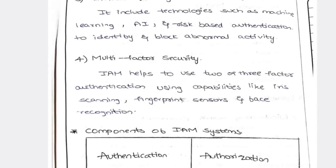The third IAM benefit is advanced tracking of anomalies — using AI like ChatGPT. Authentication helps identify and block abnormal activity. If your phone is doing any abnormal activity, it will rectify and give a hint to you. Also, if you lose your phone, you can use IAM-based tracking to locate it using security protocols.